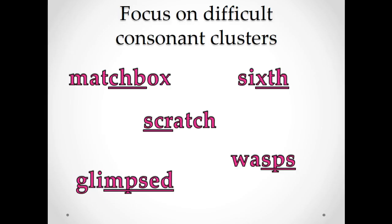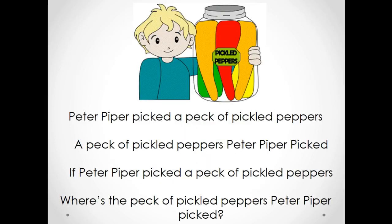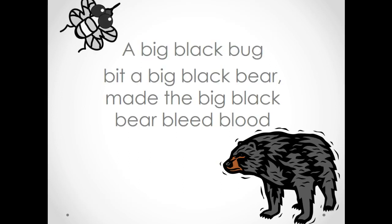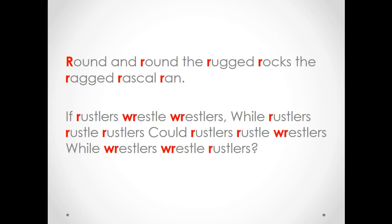So let's see what we can do when teaching the sounds. We can focus on different difficult consonant clusters like 'matchbox,' 'scratch,' 'sixth,' 'wasps,' or 'glimpsed.' We can give students tongue twisters — for example: 'Skunk sat on a stump and thunk the stump stunk, but the stump thunk the skunk stunk.' Or: 'Peter Piper picked a peck of pickled peppers, a peck of pickled peppers Peter Piper picked. If Peter Piper picked a peck of pickled peppers, where's the peck of pickled peppers Peter Piper picked?' Pause the video and practice. Also: 'A big black bug bit a big black bear, made the big black bear bleed blood.' The /r/ sound is a difficult one for Spanish speakers as well, so you can give students tongue twisters where only one sound is presented.